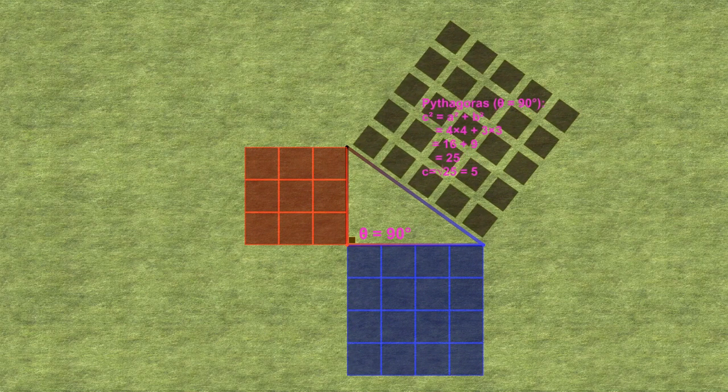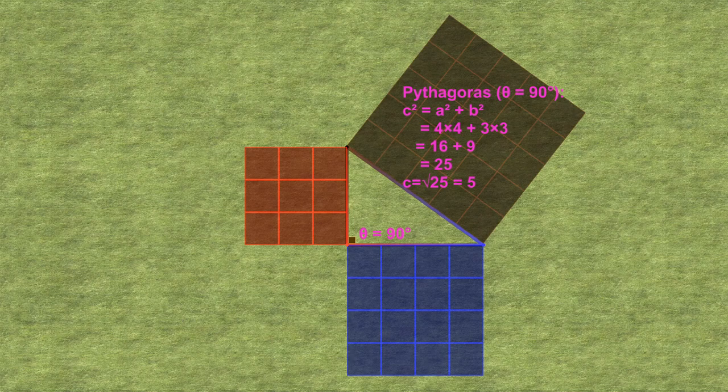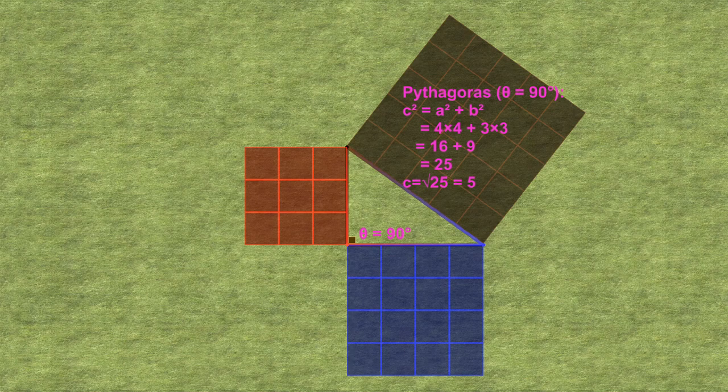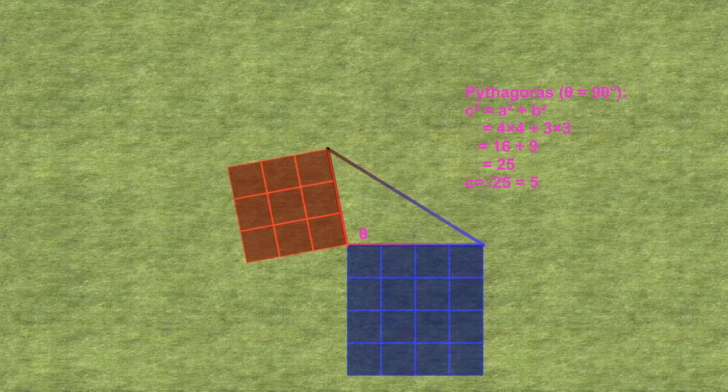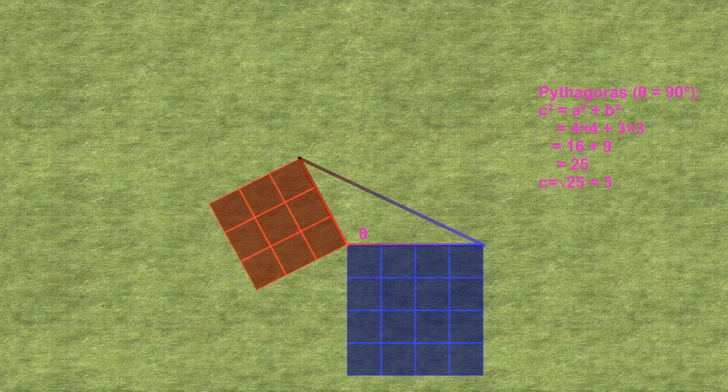According to his theory, we can calculate the length of the hypotenuse of a right angle triangle by using the length of the other two sides, using the formula c squared equals a squared plus b squared. We are graphically showing the classic example of 3 squared plus 4 squared being 25, which gives us a length of 5 for the hypotenuse.